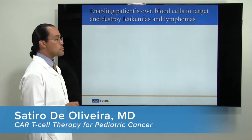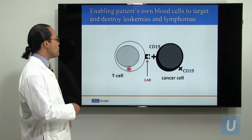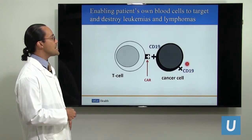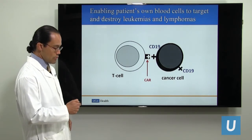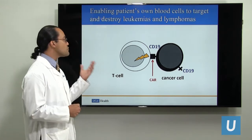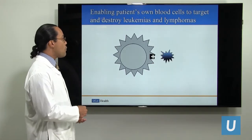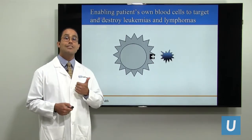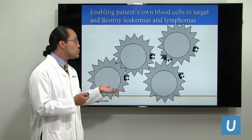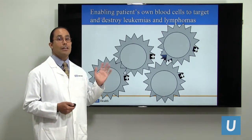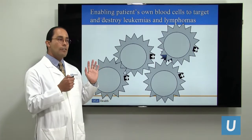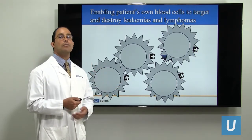Here is how it works. The T cell, already modified to carry the CAR on its surface, finds the CD19 on the surface of a cancer cell and binds to it. That binding activates a signal that transforms the T cell into a cell capable of killing the cancer cell, and the cancer cell dies. But not only that — the activating signal also makes the T cell proliferate, increasing numbers to continue killing cancer. This is why CAR T cells are called serial killers: once in the body, they proliferate and surveil the whole body to prevent leukemia or lymphoma cells from coming back.